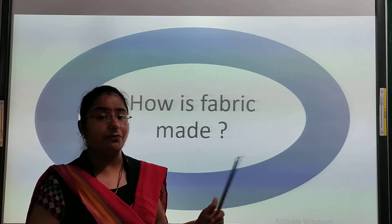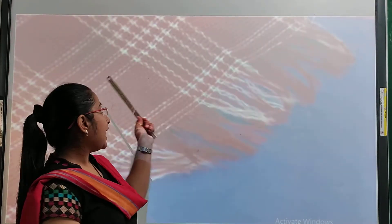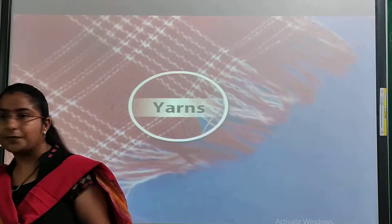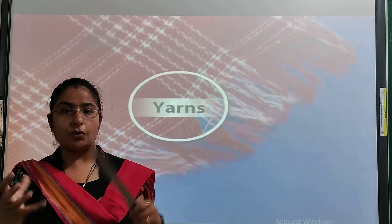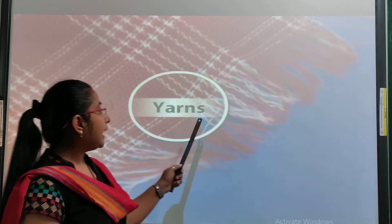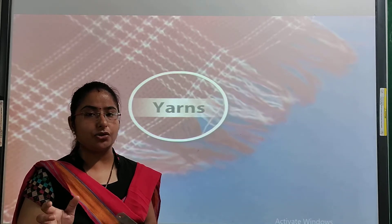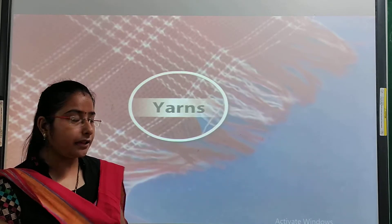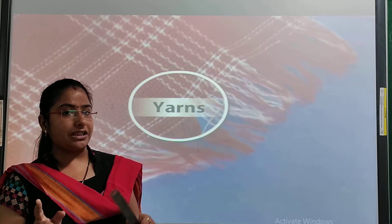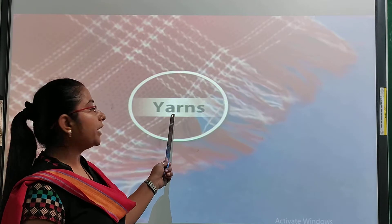Now, how is fabric made? I am showing a piece of cloth. When you zoom in, if you look closely at any fabric — any shirt or cloth — you will see that it is made up of small threads. Those small threads are known as yarn.